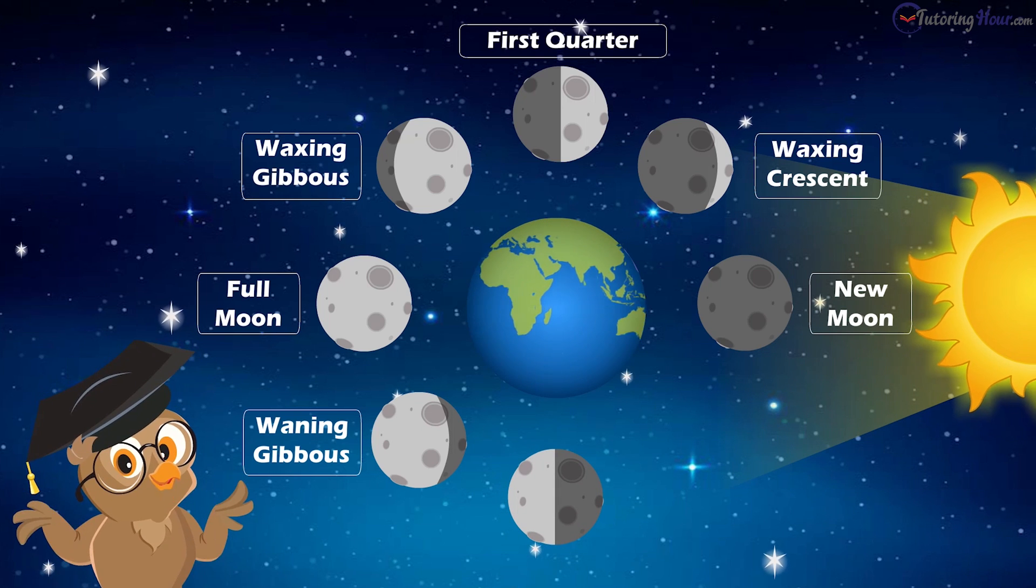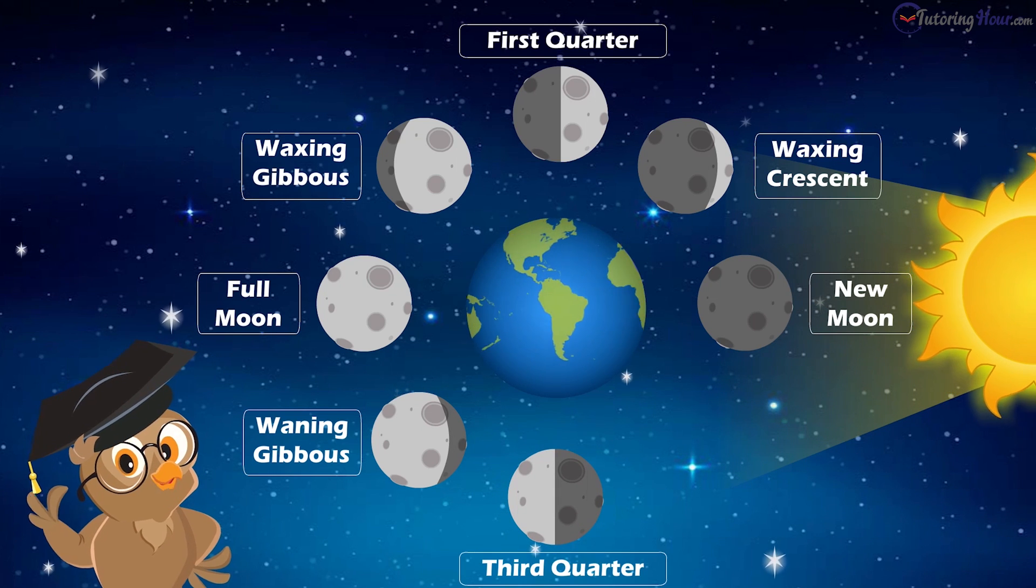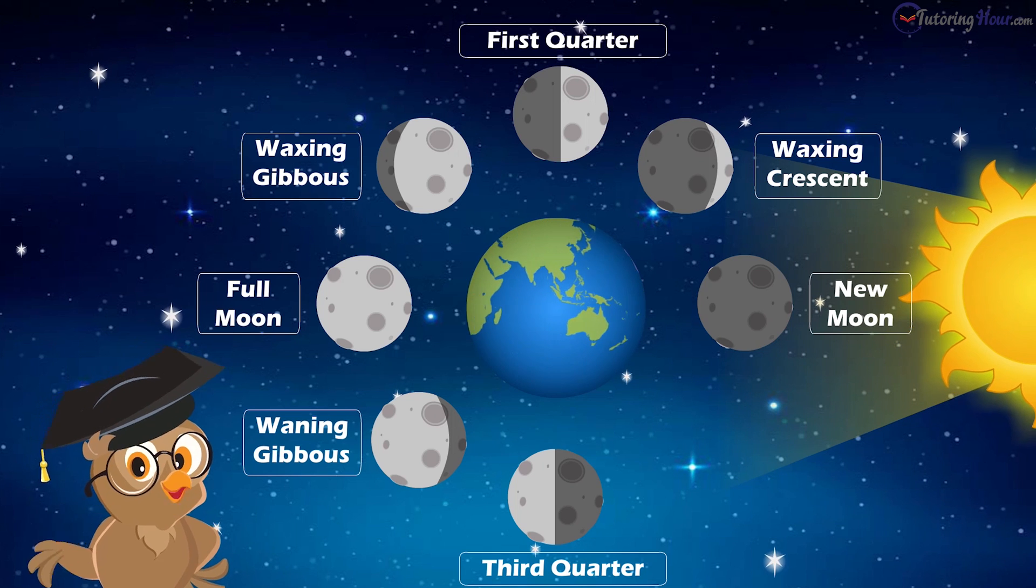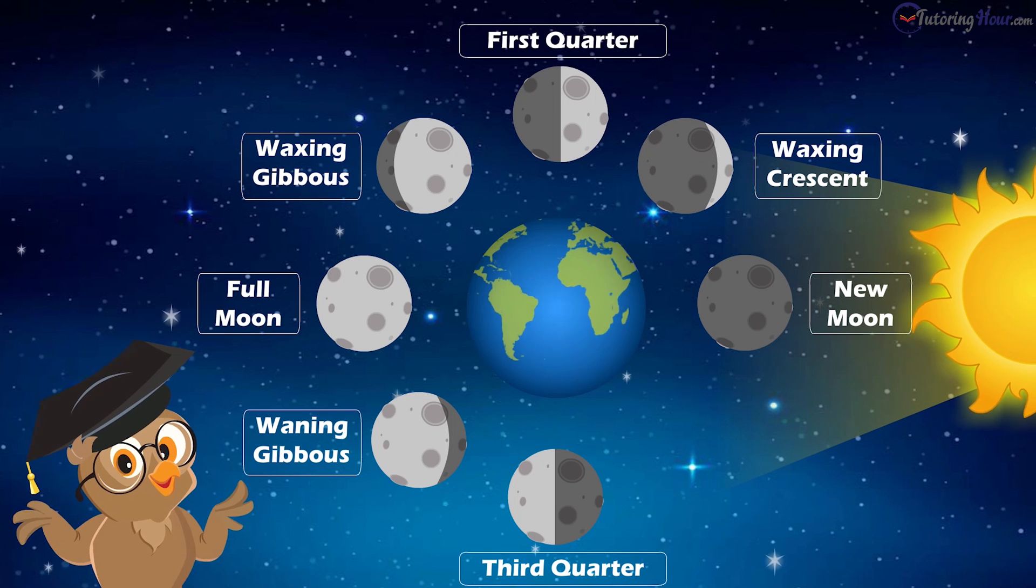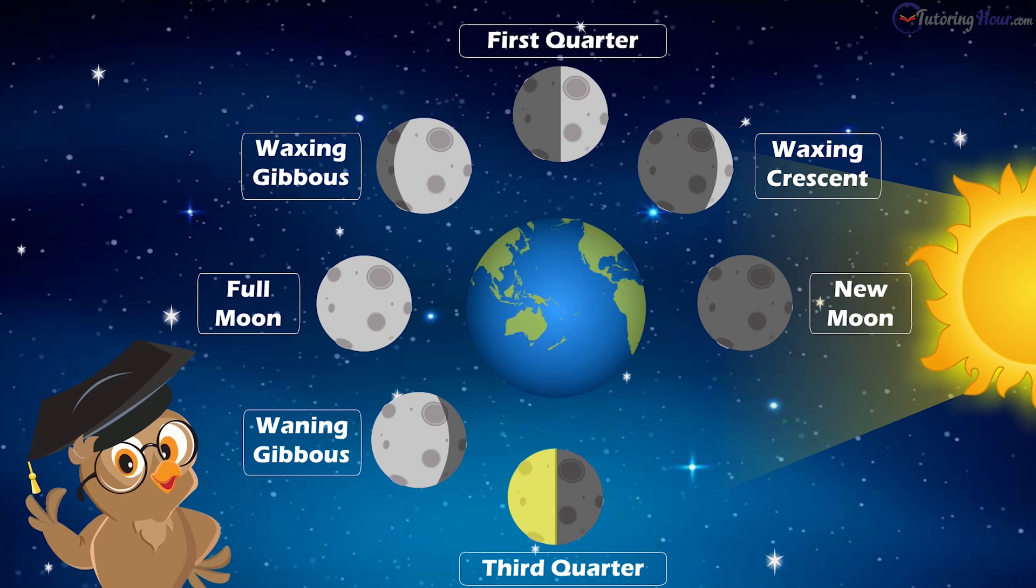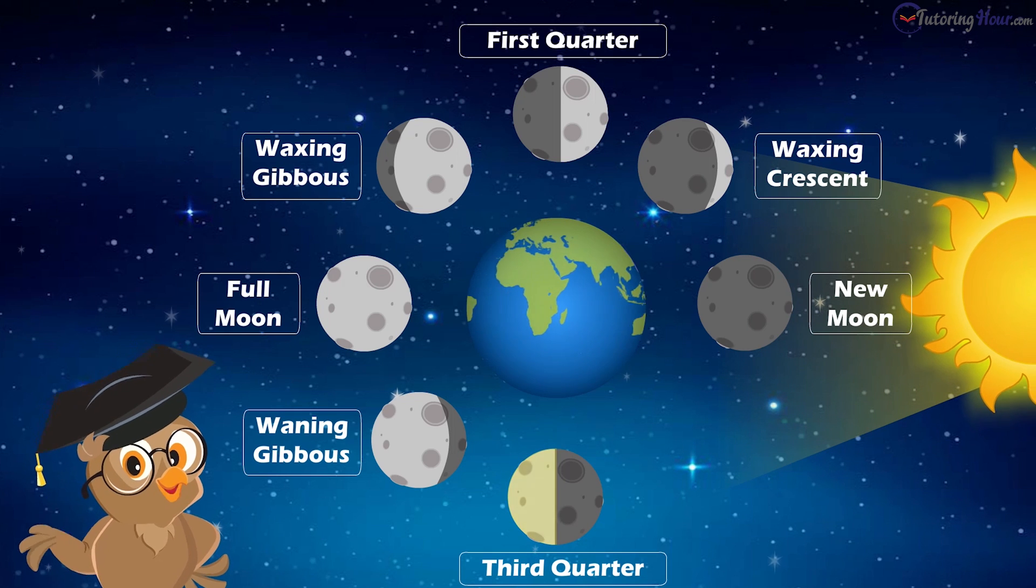Then comes the seventh phase, the third quarter. We see the third quarter moon as a half moon too, but it is the opposite half that is illuminated this time.